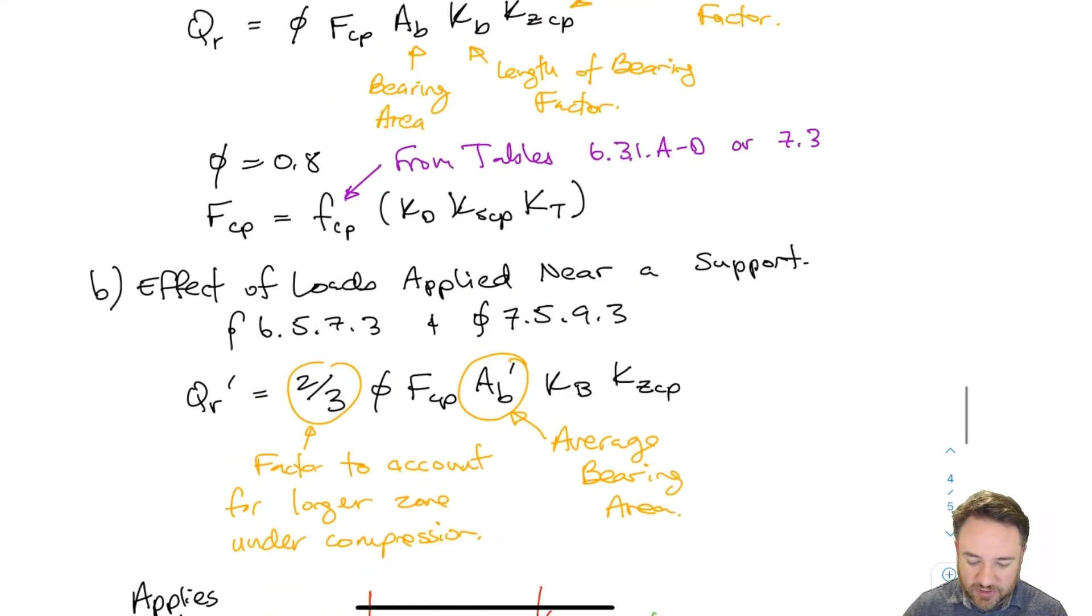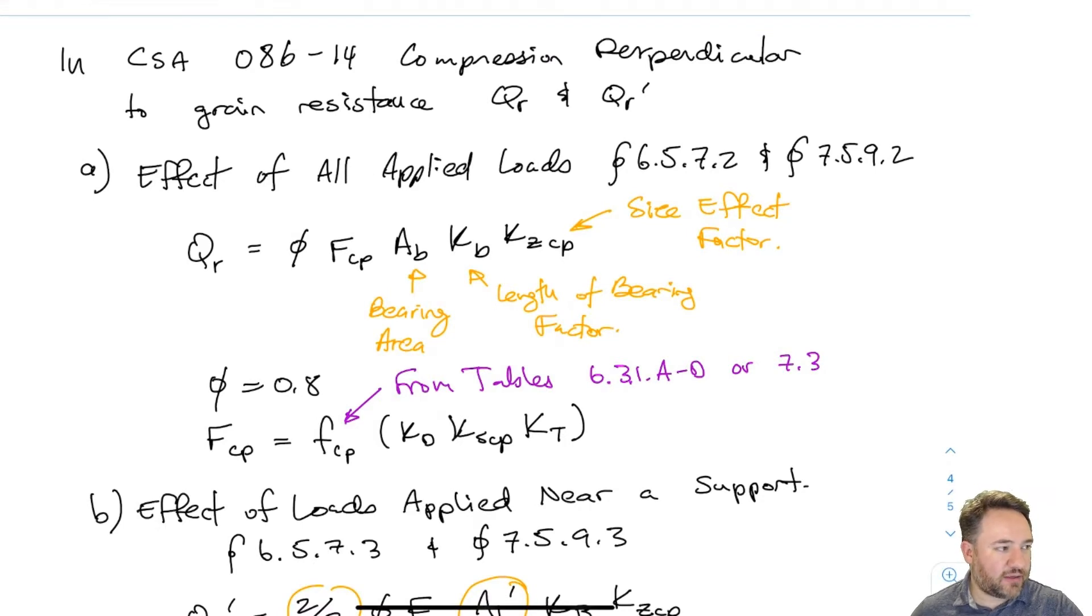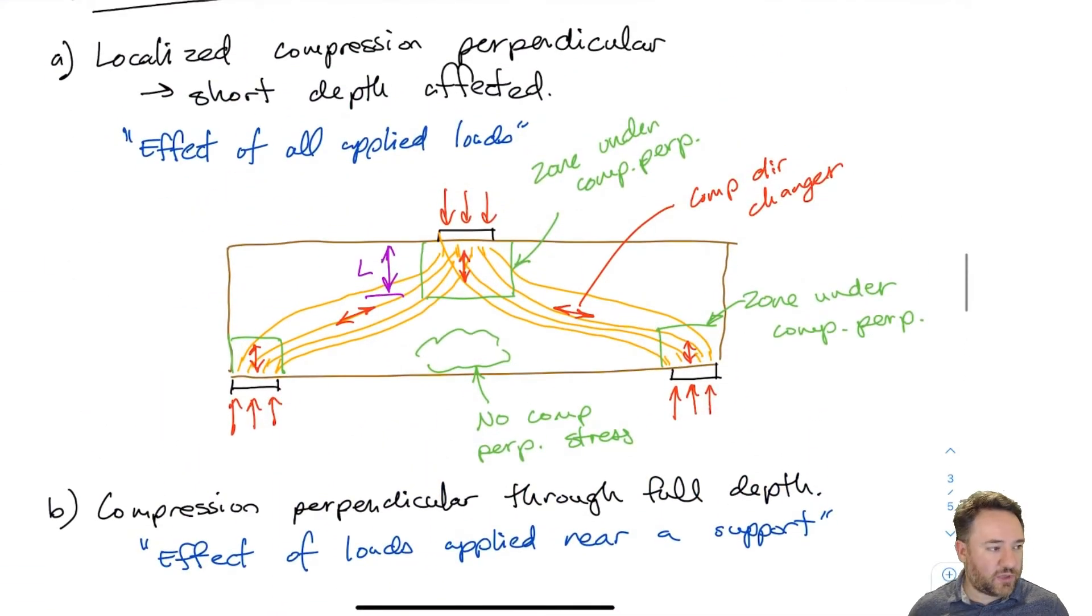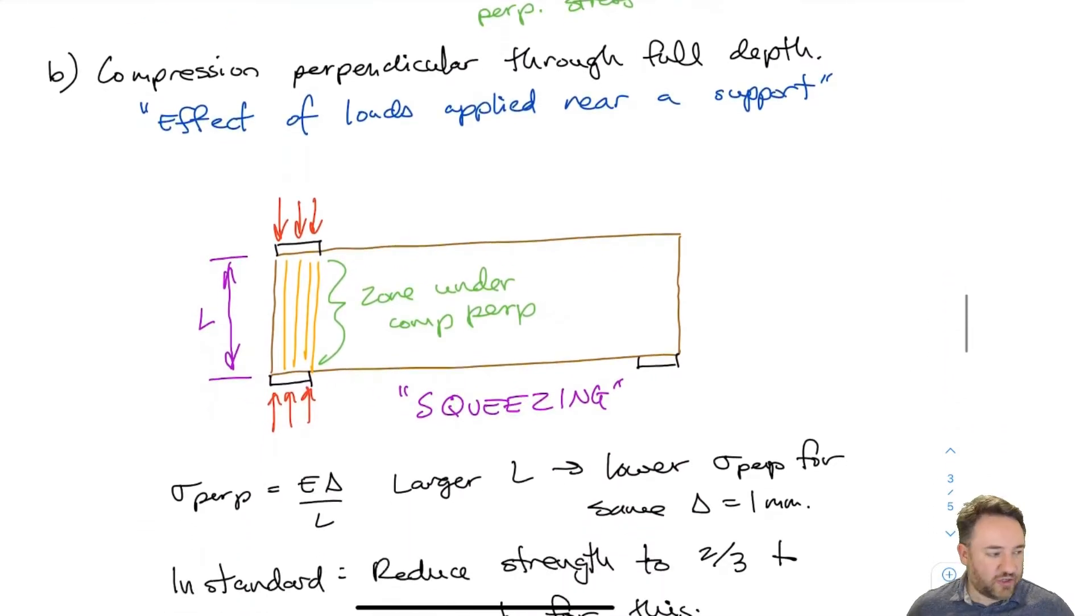In the previous video we talked about in the Canadian Standard 086 how we go about calculating perpendicular to grain resistance which is the bearing resistance for a piece of wood sitting on something else on its side grain not on the end grain. We looked at how it looks like a crunching bundle of straws and we talked about the two different cases that we have for this kind of design: one where we just have a localized compression perpendicular strain where it's not the full depth of the member that gets compressed but the compression strains branch out into shear before they get to the bearing supports at either end, and the second case which is compression perpendicular through the full depth of the member where the entire depth of that member is experiencing that compression stress.